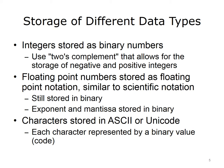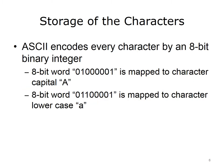Integers are stored as binary numbers, and they use something referred to as 2's complement, which allows for the storage of negative and positive integers. Floating point numbers are stored as floating point notation, which is similar to scientific notation, with the exponent and mantissa stored in binary format. Characters are stored in the American Standard Code for Information Exchange, or ASCII format, or Unicode format. Each character is represented by a binary value. ASCII encodes every character by an 8-bit binary integer. The 8-bit word 01000001 is mapped to the English language alphabet character capital A. Notice that this is a capital A, not the lowercase a, which is mapped to the 8-bit binary word 01100001.